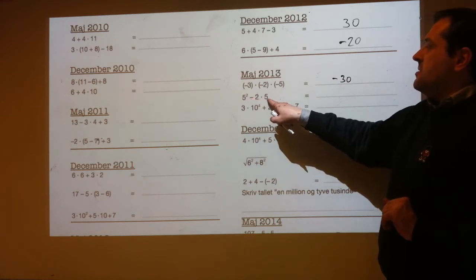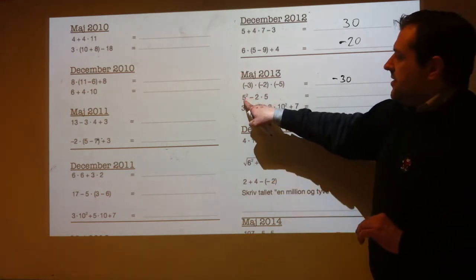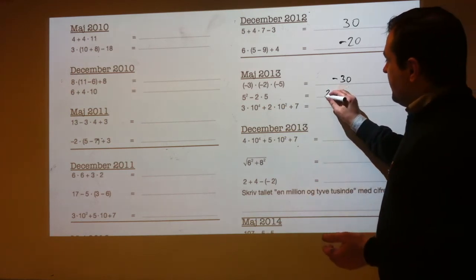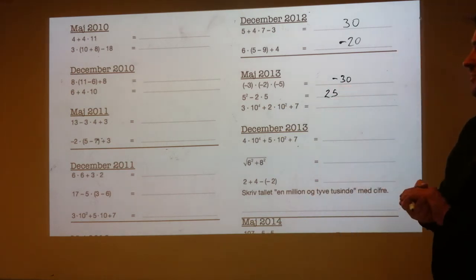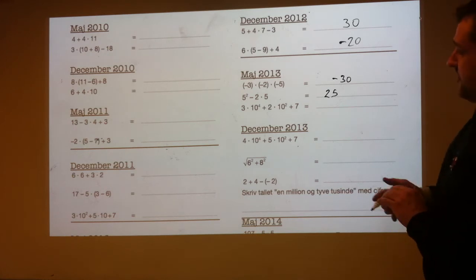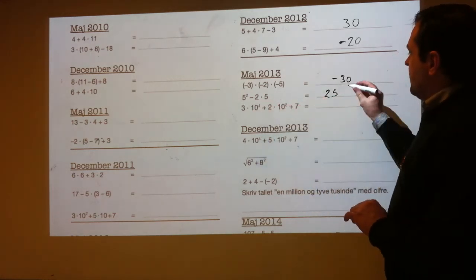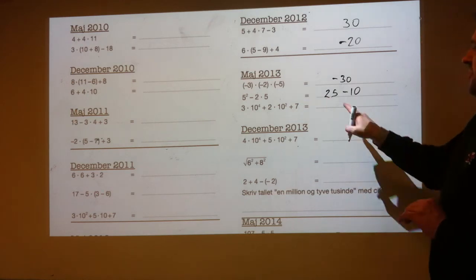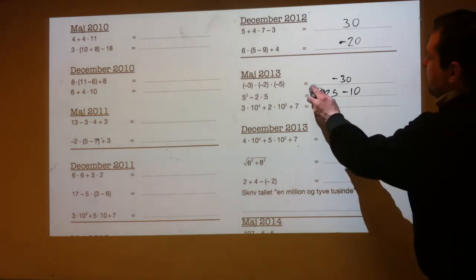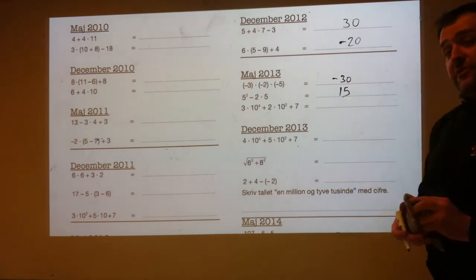5 squared minus 2 times 5. 5 squared means 5 times itself: 5 times 5 is 25 — not to be confused with 5 times 2. Minus 2 times 5: 2 times 5 is 10. So it's the same as 25 minus 10, which is 15.